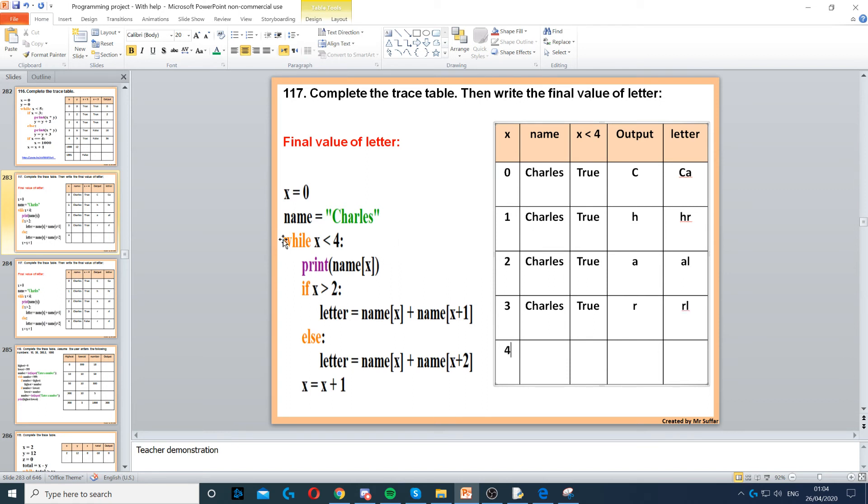Then X increases to 4. While X is less than 4, so Charles stays the same. X is less than 4, that's false, so you don't really need to carry on with Charles here. You can only put it once because it never changes, but you can just put it to make sure you remember where it is. So that's false, and now you're done. So at the top it says final value of letter, of letter, that's R L.